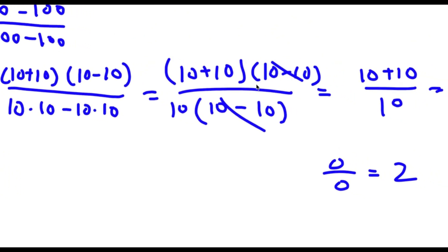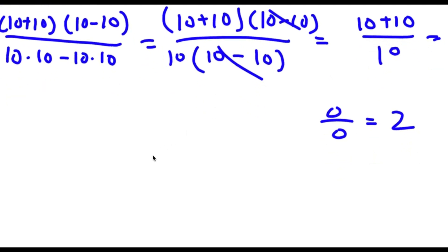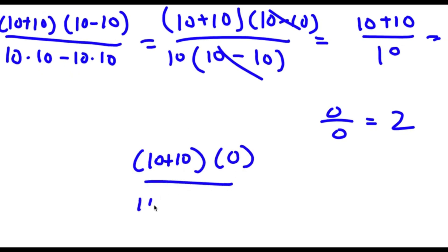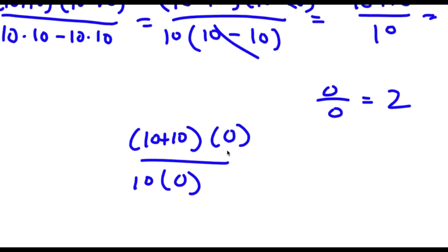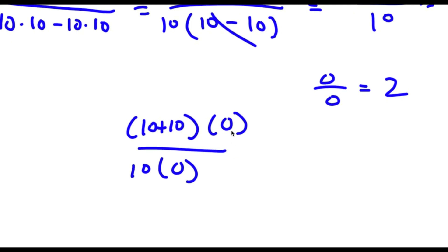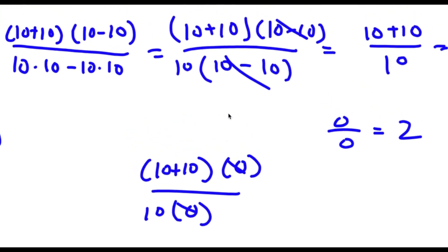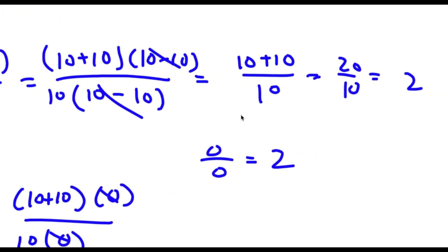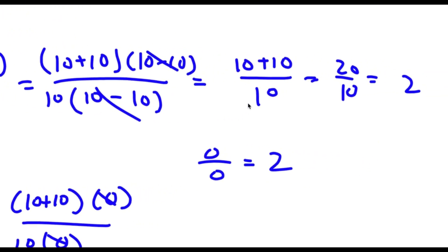If you're wondering where the mistake was made, it was right here when I canceled out both (10 - 10)s. 10 minus 10 is actually equal to 0, so this means I have (10 + 10) times 0 over 10 times 0. You can't actually divide 0 by 0 because 0 divided by 0 is undefined. So I can't cancel these two out — that's where I made my mistake.